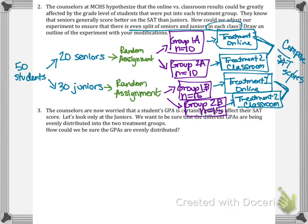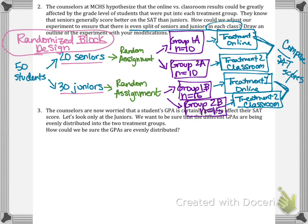We should name this design. When we break subjects into groups before doing the random assignment, we call this a randomized block design. The idea is that we broke them into blocks first to ensure an equal number of juniors and seniors receive both treatments, because grade level can influence the outcome.